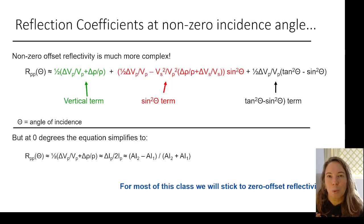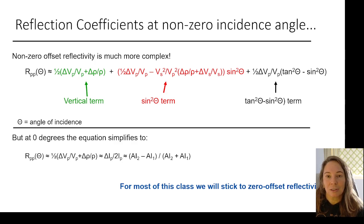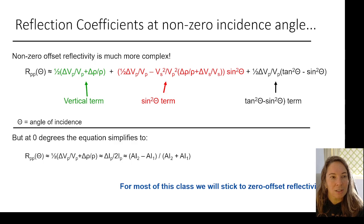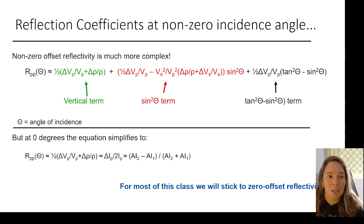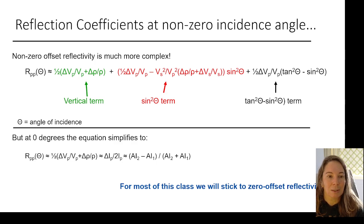We can also look at reflection coefficients at nonzero incidence angles. We'll talk about the Zoeppritz equation later in a later lecture, where we may be doing seismic inversion or thinking more about AVO effects in the seismic data.